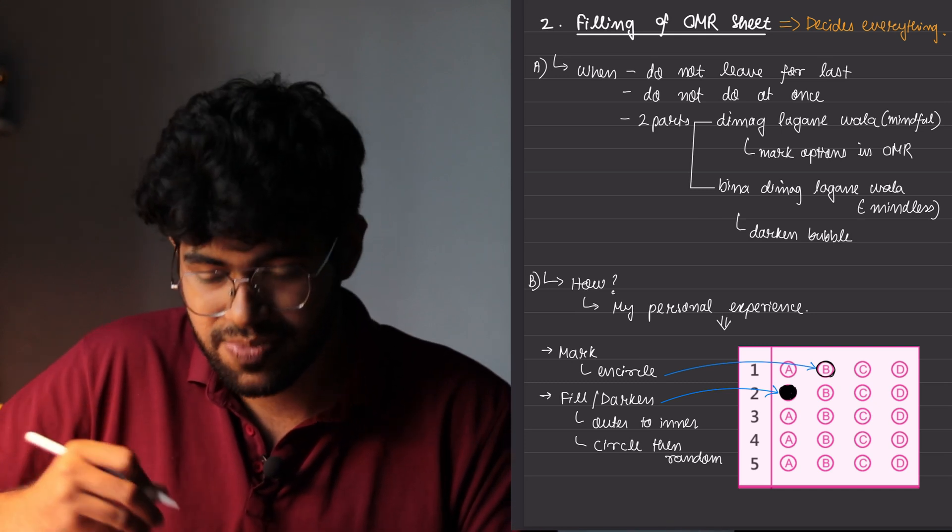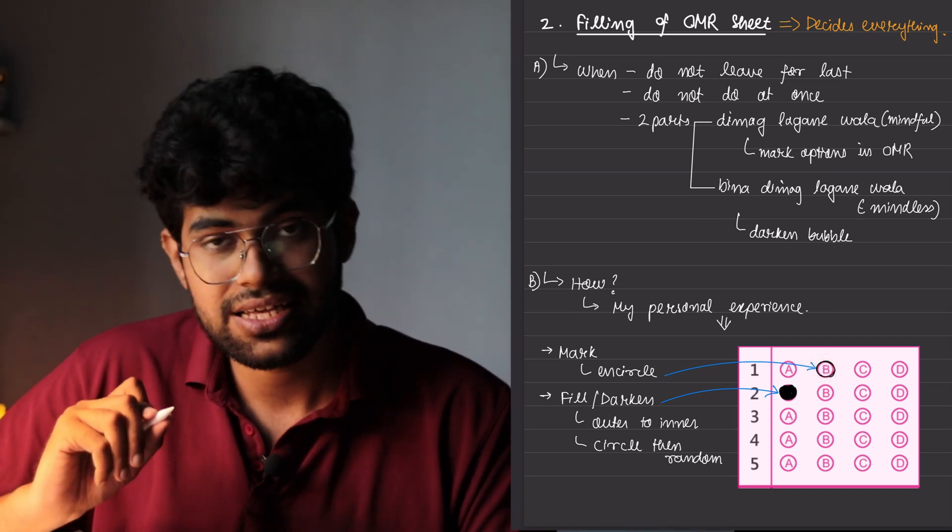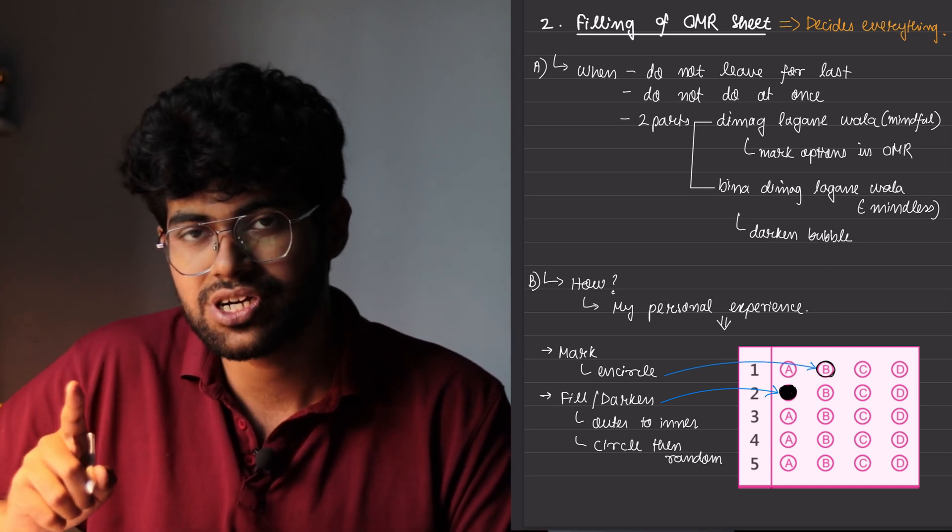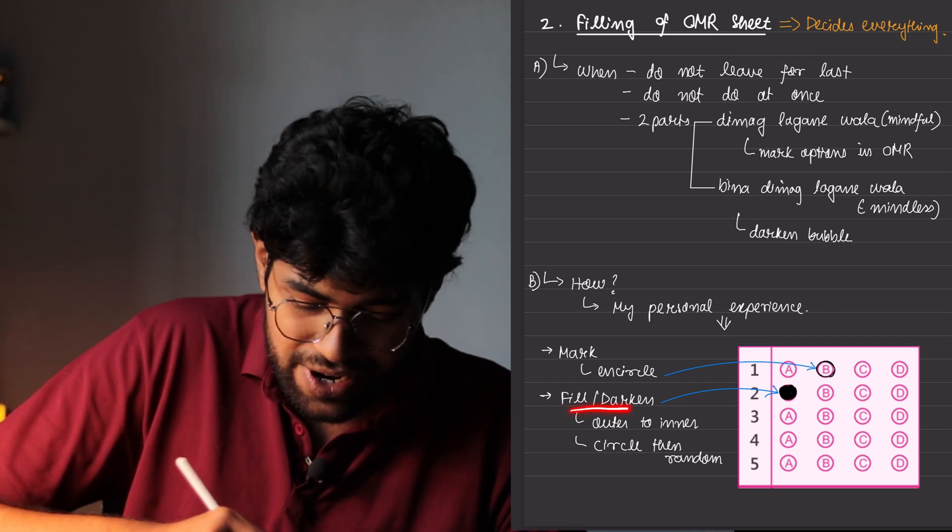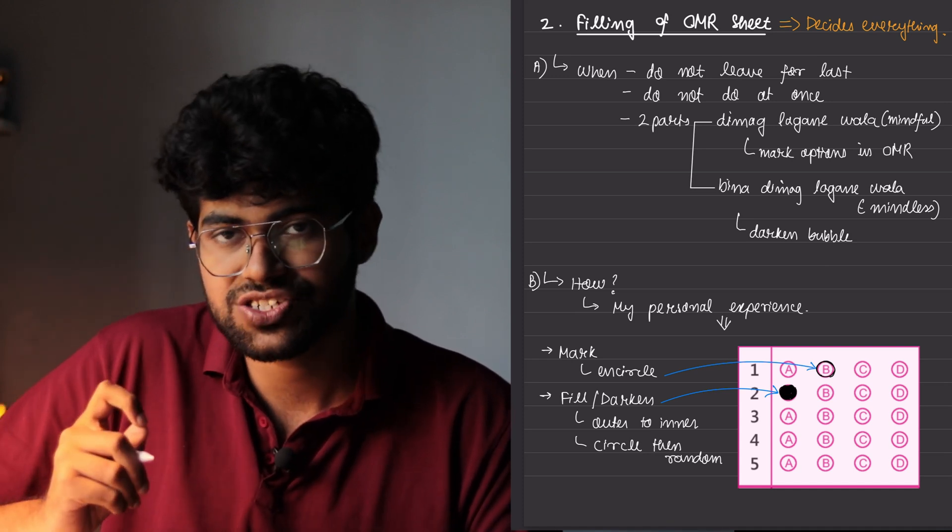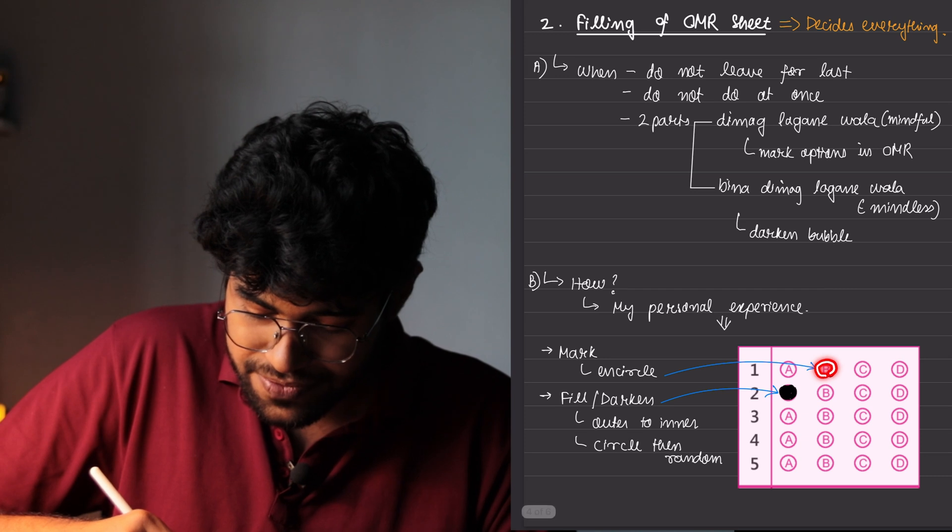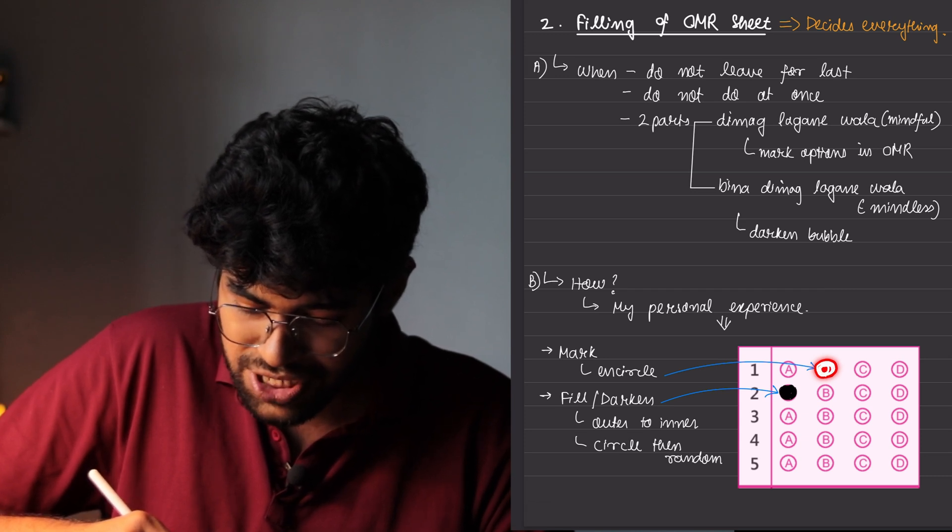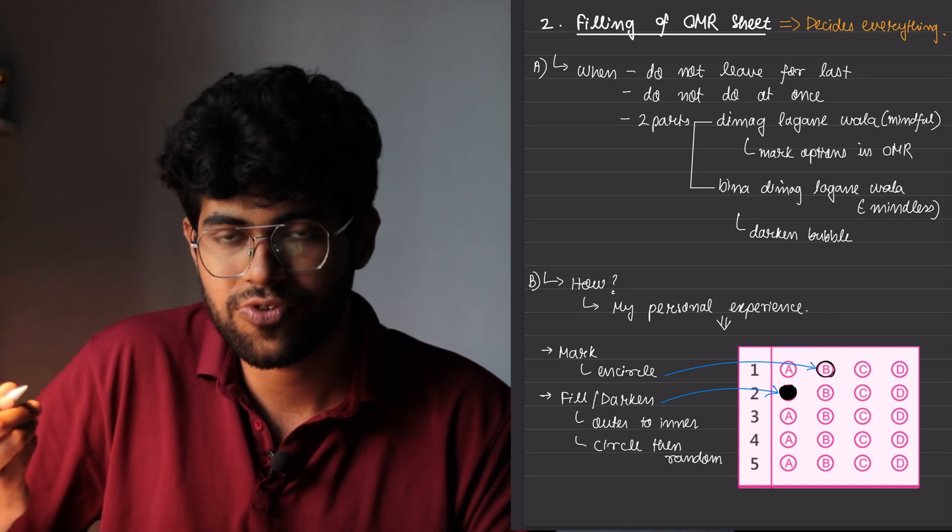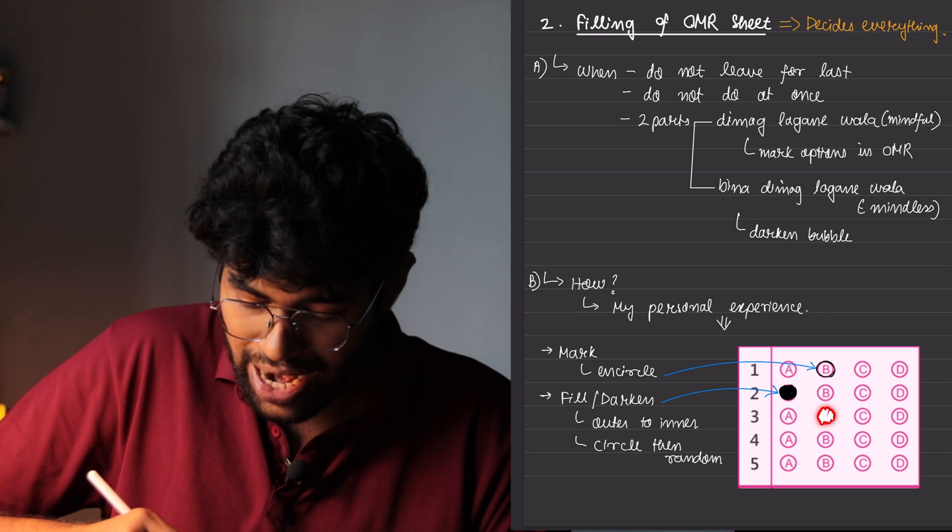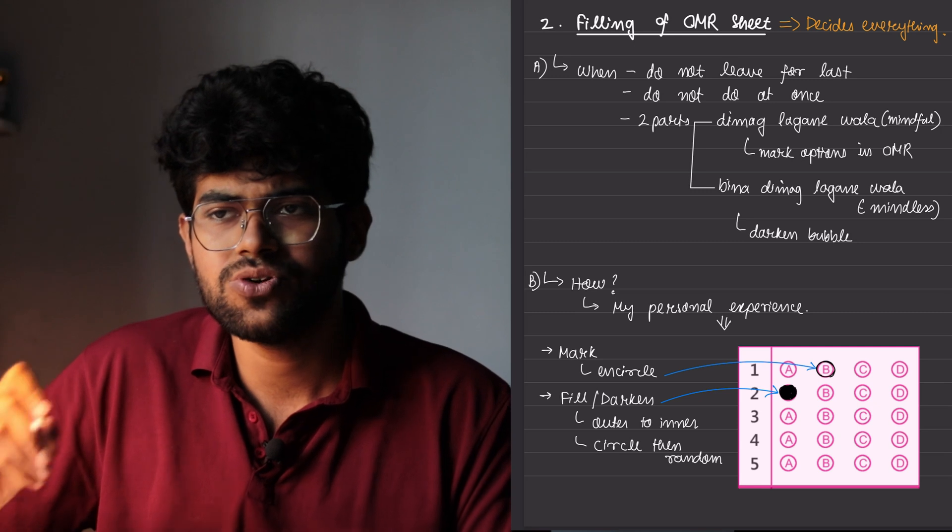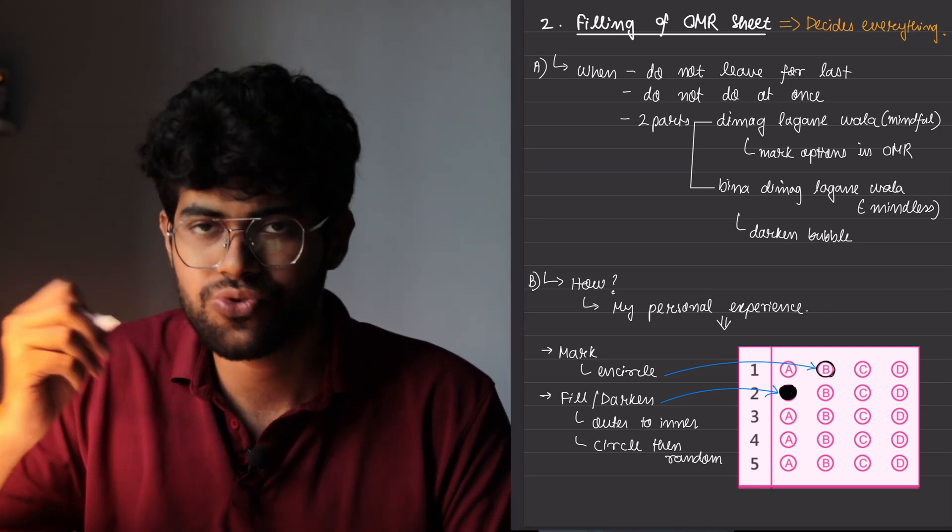So basically, if the first question's answer is B, you have to encircle it like this and also encircle it in a way that when you are going to darken those bubbles, you do not have a confusion. After that, how to fill or darken the bubble is, I have tried multiple ways of how to do this. And the quickest and the fastest way I found was from the outside, you come inside in circle and then you just do randomly so that to fill the bubble in the least amount of time. This was the thing that worked for me. You might do this this way also, and you might do this completely in circles also. But I found that in this way, I was able to properly circle the bubbles without leaving any gap and also in the quickest way.